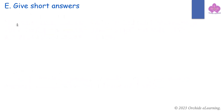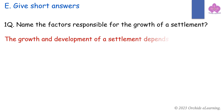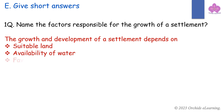Give short answers. Name the factors responsible for the growth of a settlement. The growth and development of a settlement depend on suitable land, availability of water, favorable climate, and fertile soil.